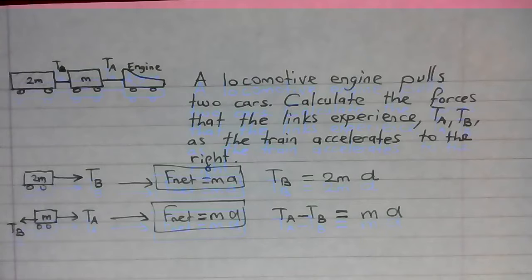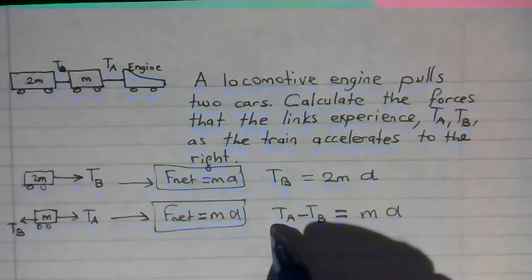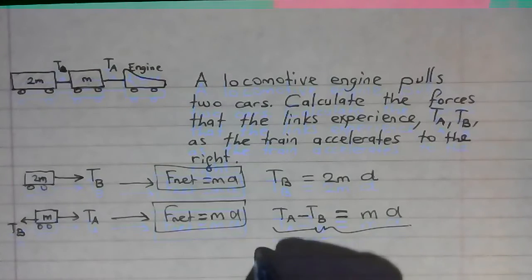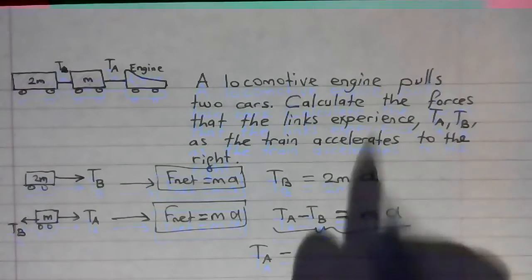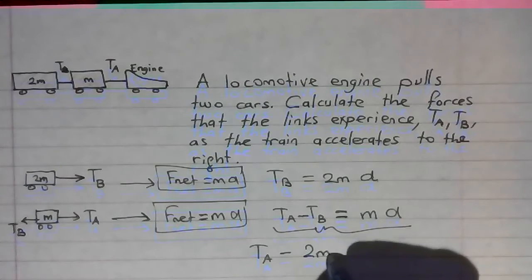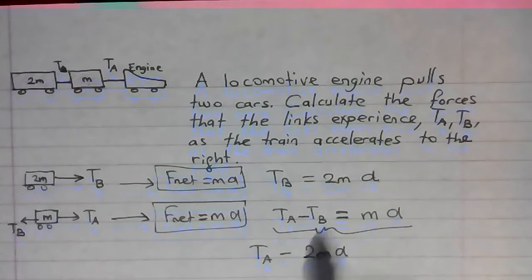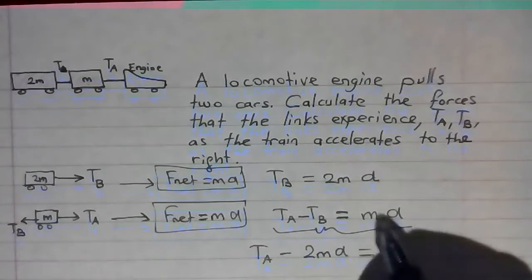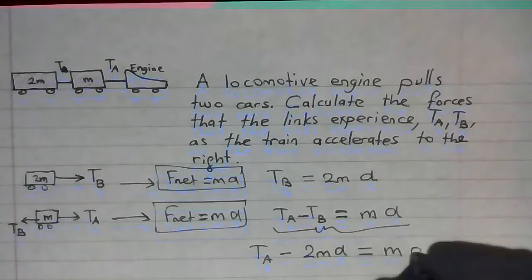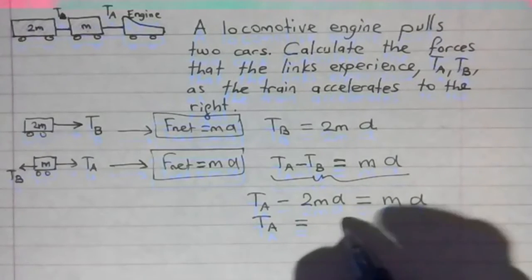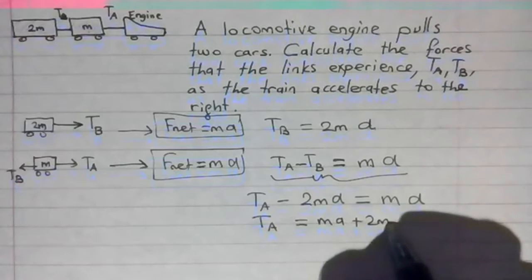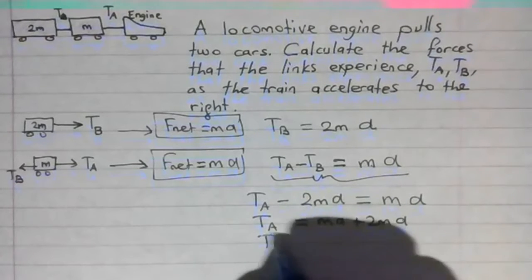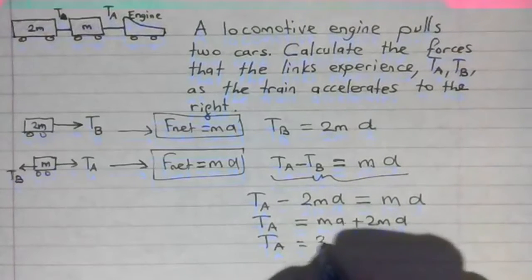To calculate the forces that the links experience, we take this first. TB is 2M times A, so that means I can write 2MA instead of TB. TA minus 2MA equals MA. After rearranging, TA equals MA plus 2MA, so that means TA is 3MA.